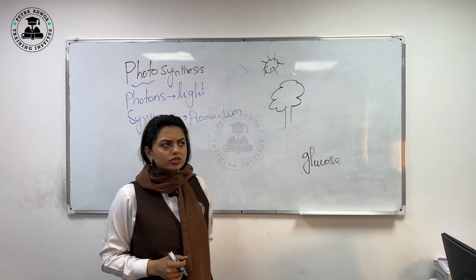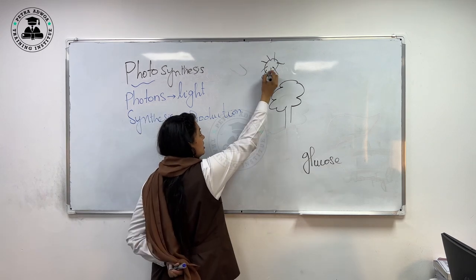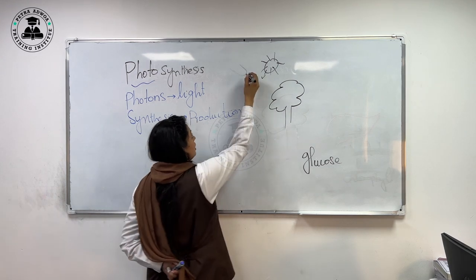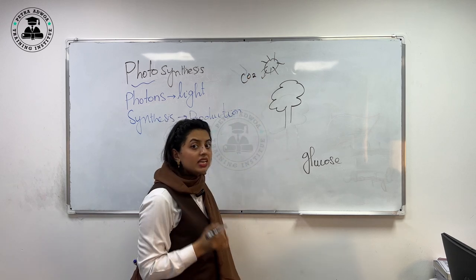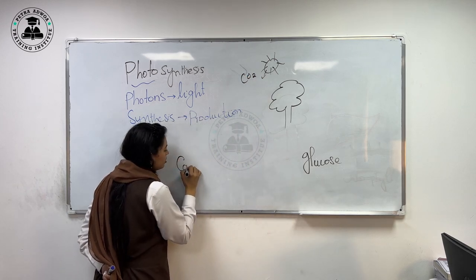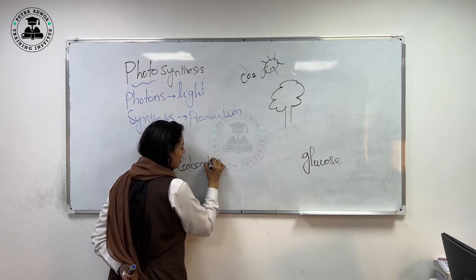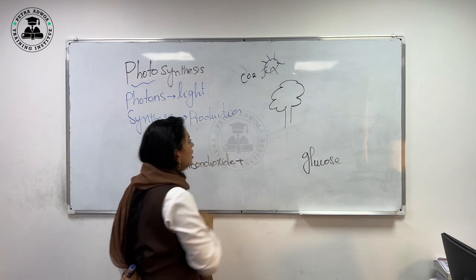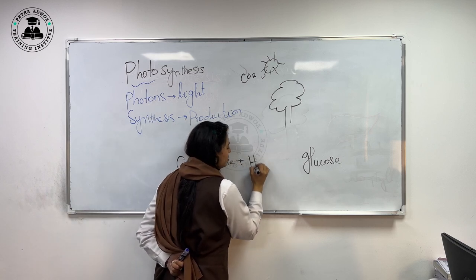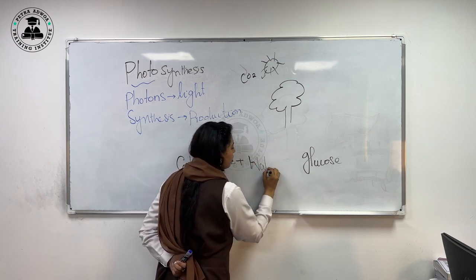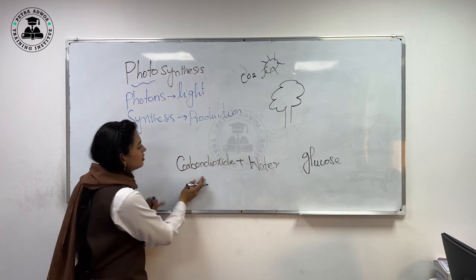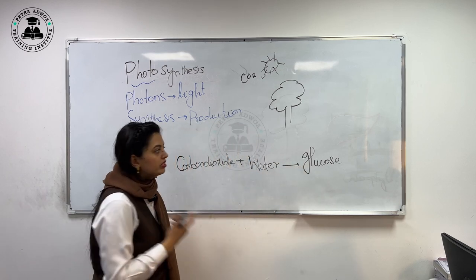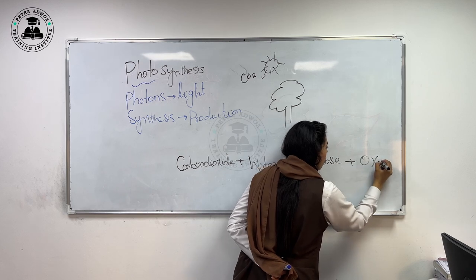How can they prepare their own glucose? Plants can use light energy as well as other things. They use carbon dioxide, which is present in the atmosphere, and they also use water. So plants can use carbon dioxide and water. As a result, they can produce glucose as well as oxygen.